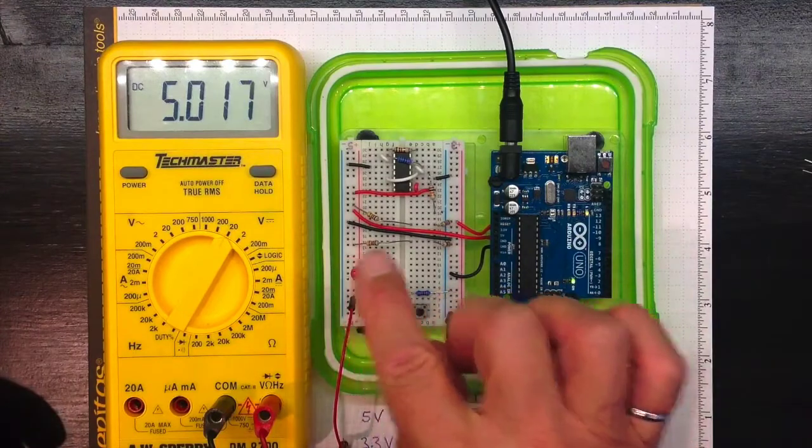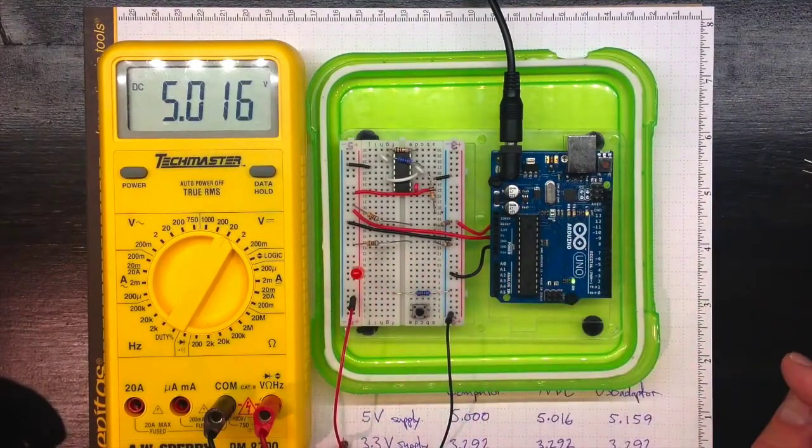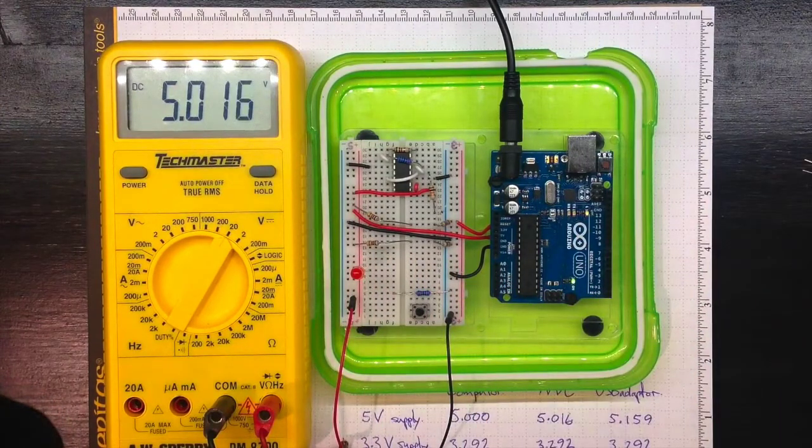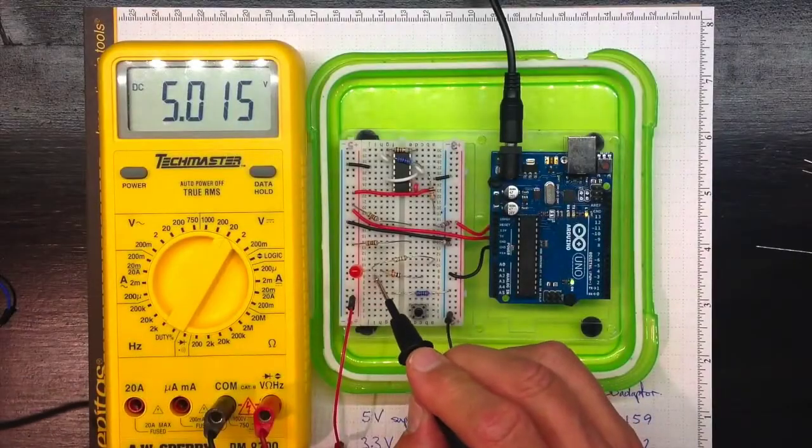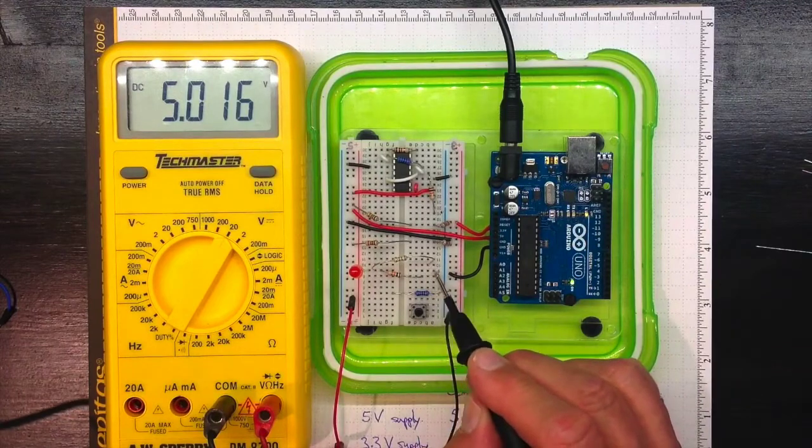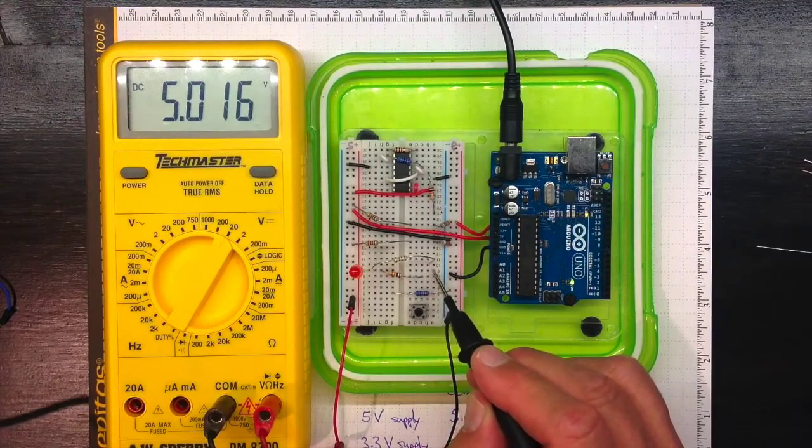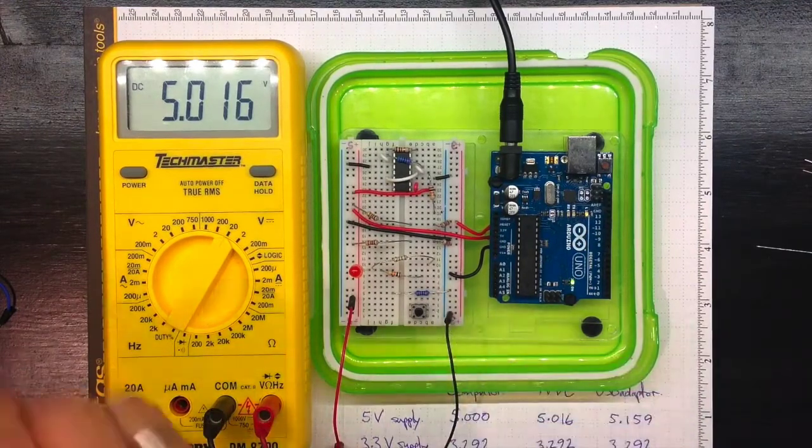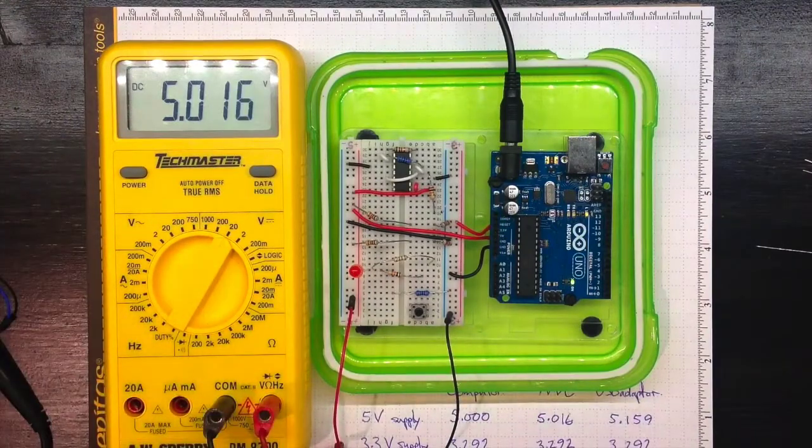But instead of connecting it directly to ground and letting all that current flow, I'll use a resistor. So it's connected here to here to here to these resistors but right now these resistors aren't connected through to anything. So nothing's completing the circuit. Let's see what happens if we complete the circuit.